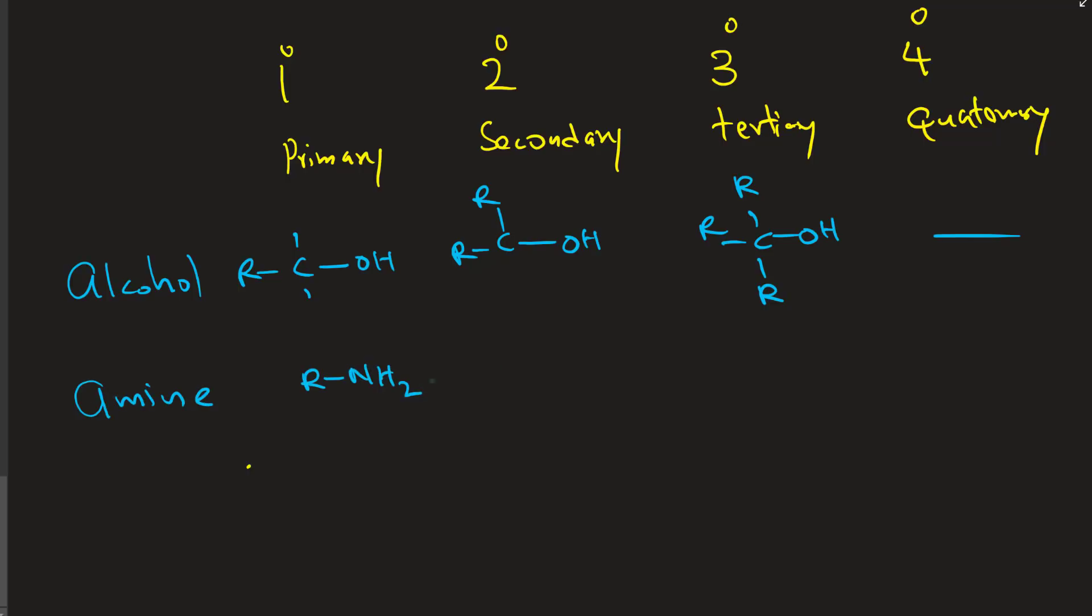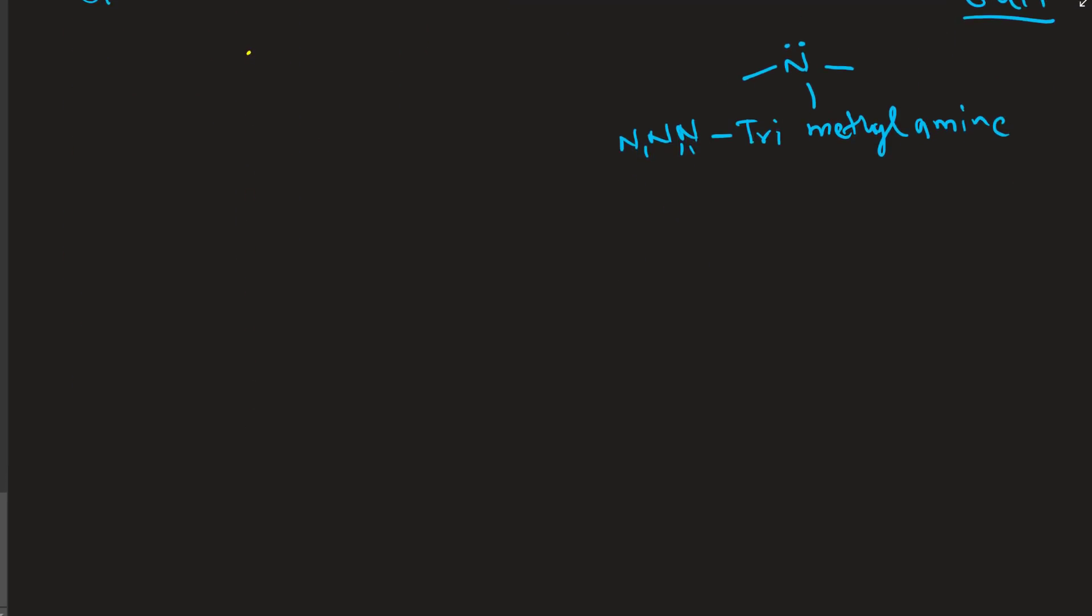Amine. Amine, when you have one R group attached, it's primary. Two R groups attached, secondary. Three R groups attached, tertiary. There's no hydrogen on the tertiary. There's quaternary. That's a salt. Because R groups, four R groups attached to a nitrogen positive. That's a salt, actually. Let's fix this one. R3N. There's no hydrogen. This is good example. Trimethylamine. There's three methyls. All hydrogens are gone of the amine. And three R groups. It's also called NNN trimethylamine. Don't bother about the names on this type too.